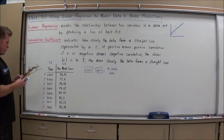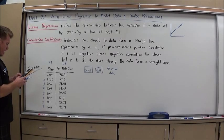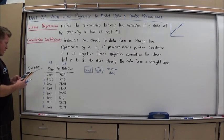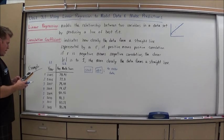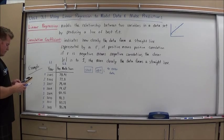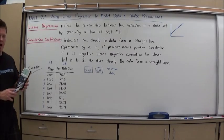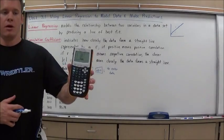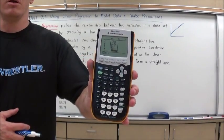So, I'm going to enter it as 1, 2, 3, 4, 5, 6, 7, and 8. And for L2, my average is 78.91, 77.8, 79.44, 79.67, 80.55, 81.3, 83.21, 85.78. And now I have my data entered into the calculator for L1 and L2.